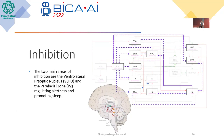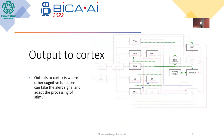For inhibition, we have two main areas: the inhibitory system that is the ventrolateral preoptic nucleus and the parafacial zone. These areas regulate awareness and promote sleep. Finally, we have the output to the cortex. That signal is where other cortical functions can take the awareness signal and adapt the processing of stimuli. For example, the motivation function can take the signal in the orbitofrontal cortex and adapt its behavior based on the current alertness level.